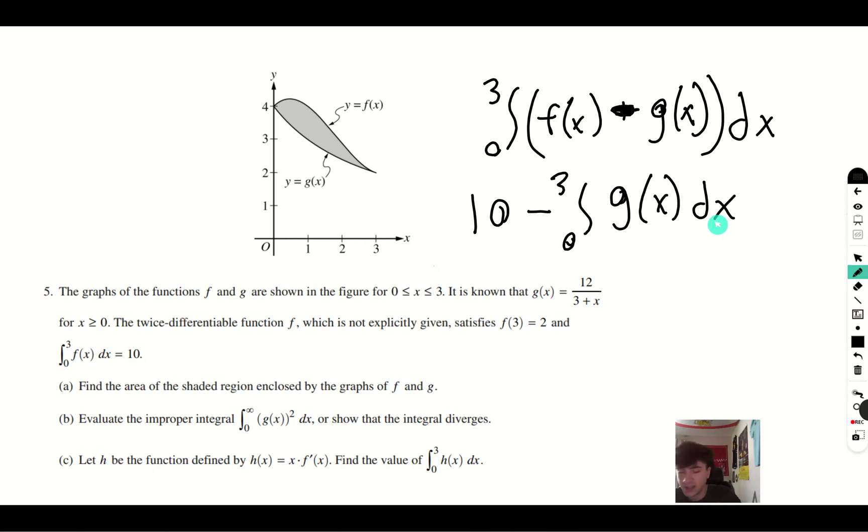Math 9. We're going to do the integral from 0 to 3. 12 divided by, in parentheses, 3 plus x dx. This gives us 8.3. So we get 10 minus 8.3 gives us roughly 1.7. So the area will be 1.7 units.